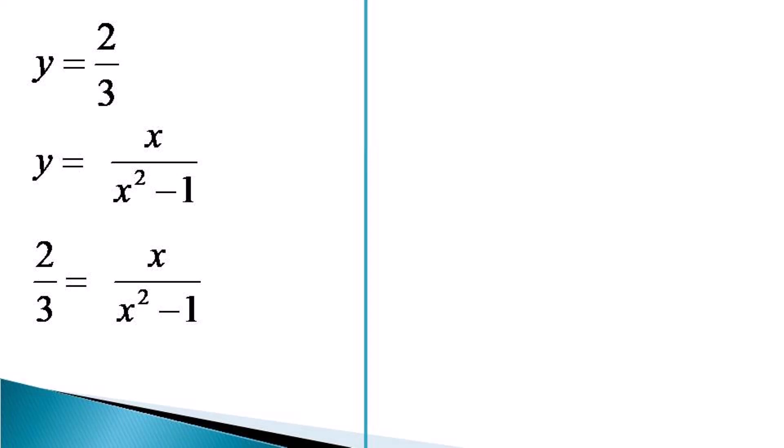We go for cross multiplication to get 2x² - 2 = 3x. Now bringing all the terms on the left hand side, we get 2x² - 3x - 2 = 0.